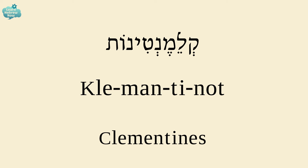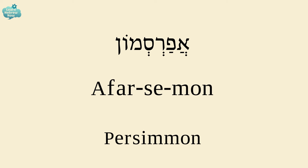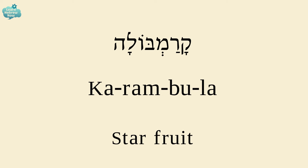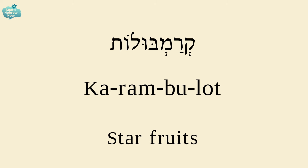The word for persimmon is AFARSEAMON. And the plural for persimmons is AFARSEAMONIM. A star fruit is KARAMBULA. And the plural for star fruits is KARAMBULOT.